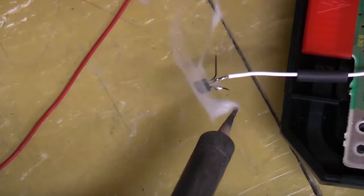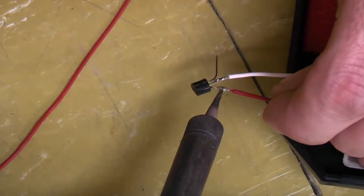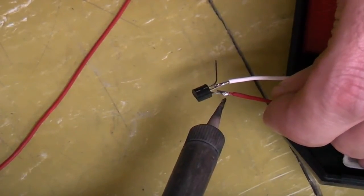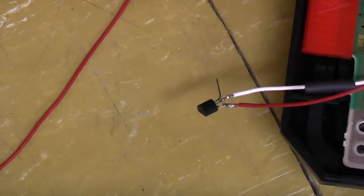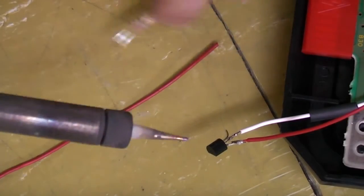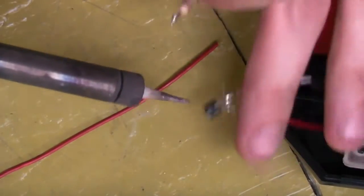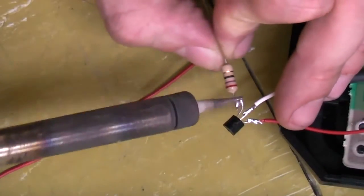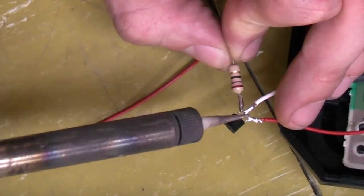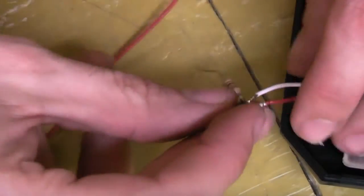And lastly, we need to hook on our 27 ohm resistor. Okay, we just solder this onto the last leg, right there we go.